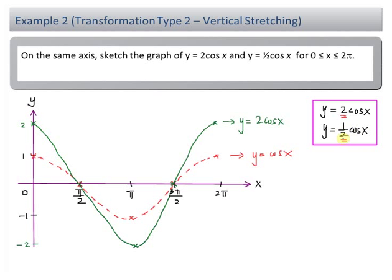Now I'm going to sketch y equal to half cos x. This is an example of vertical compression, so the scale factor here is half. So I need half and negative half here. They're going to start from half, back to 0, to negative half, to 0, and half again. So this blue curve here is y equal to half cos x. If you compare y equal to half cos x with y equal to cos x, you can see that the graph of y equal to half cos x is being compressed vertically, while y equal to 2 cos x is being stretched vertically.